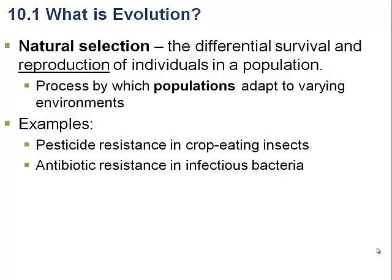At this point, we want to continue our discussion of evolution by talking about a couple of closely related topics that we need to understand, and then talking a little bit about the history of Darwin. Natural selection is a term that we'll cover more in the next chapter, where we'll talk about different types of natural selection. But natural selection is a relatively simple idea.